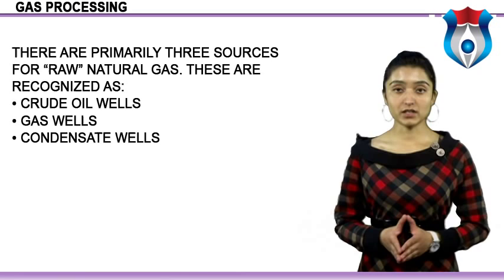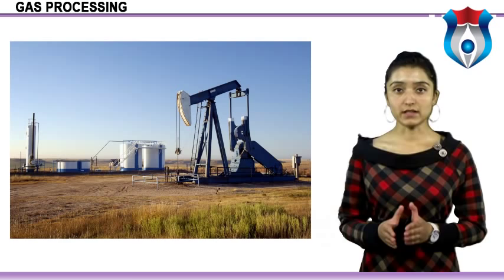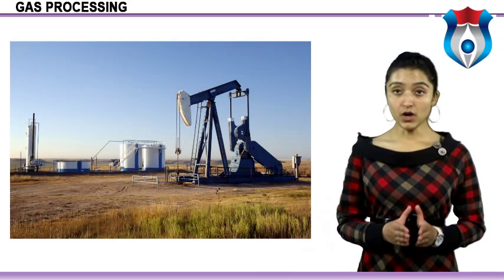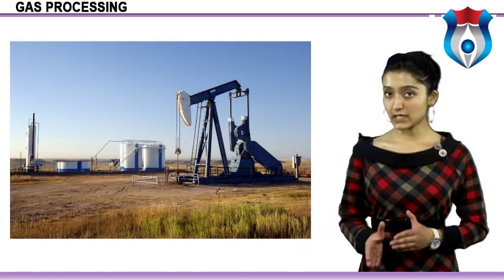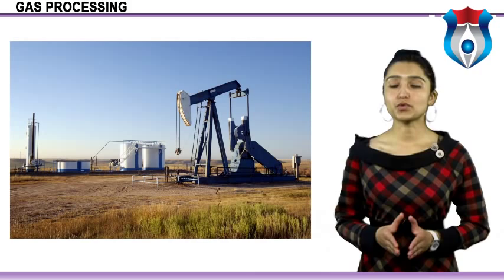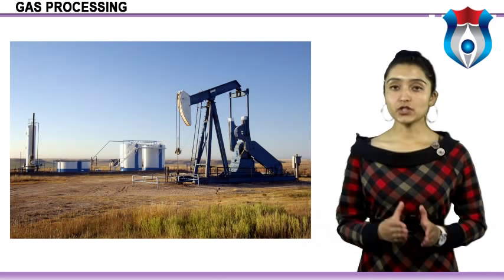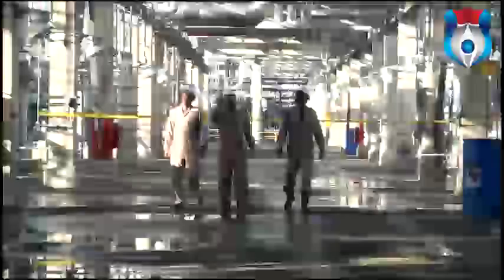Fractionation of NGL requires a number of distillation columns for separation to the desired components and products. There are primarily three sources for raw natural gas: crude oil wells, gas wells, and condensate wells. Natural gas that comes along with crude oil is known as associated gas. Non-associated or free gas comes from gas wells and condensate wells with little or no oil. Gas wells produce raw natural gas only, while condensate wells produce gas along with light fluid hydrocarbons known as natural gasoline.